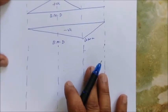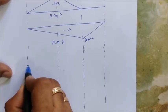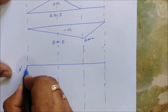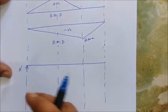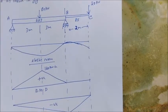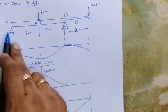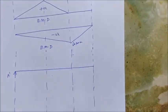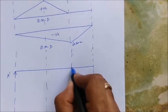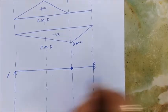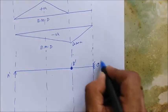Now let's draw the conjugate beam. Here A' is a hinge — simply supported. When it comes to B, B is an intermediate support. This is the free end, this is the support, and this is the intermediate support. Per the conjugate beam theorem, the intermediate support becomes a hinge, and the free end becomes fixed. So this is the conjugate beam: A', B', and C'.